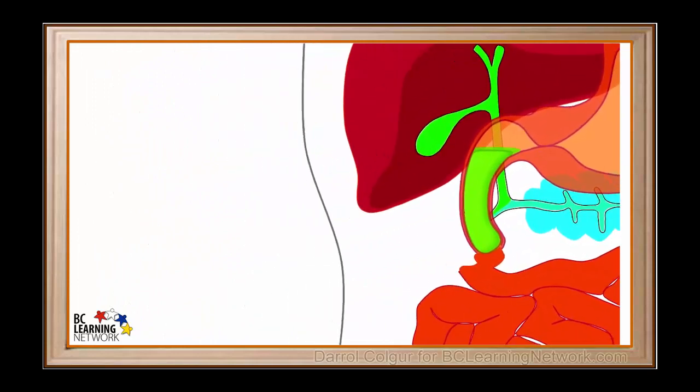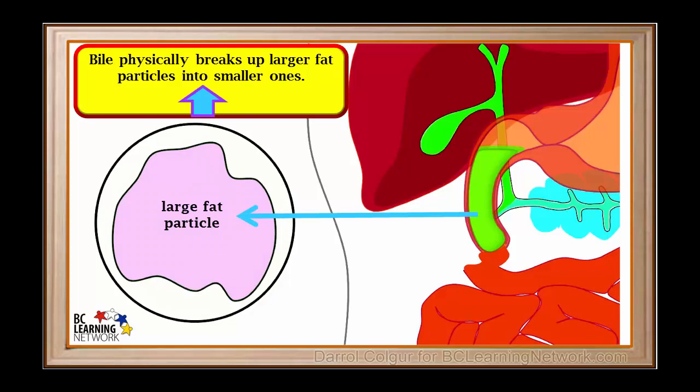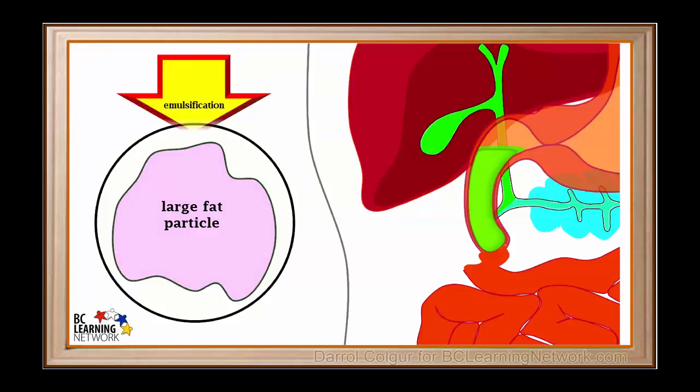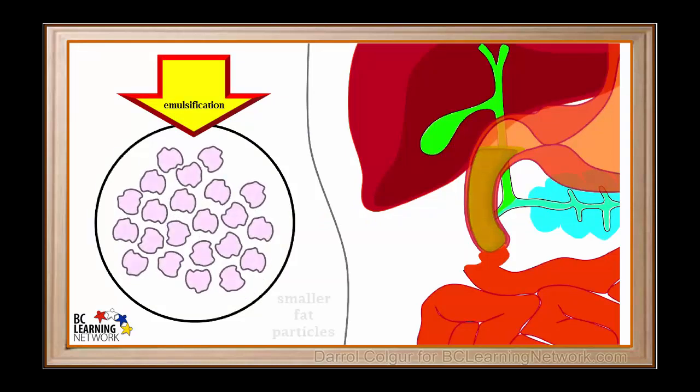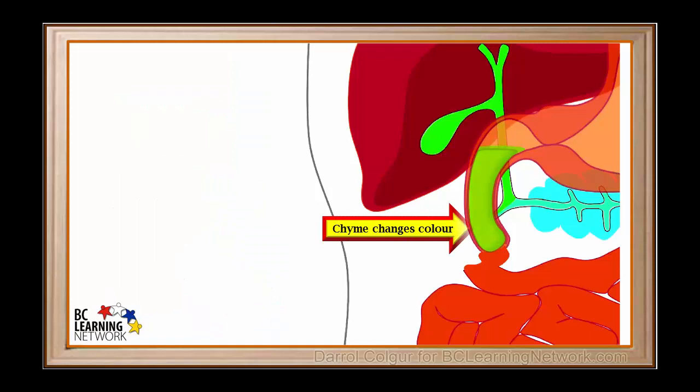Partially digested food at this point contains some large fat particles. Bile physically breaks up large fat particles into smaller ones. This process is called emulsification. We see the large fat particle breaking up into smaller particles. No chemical reactions occur during emulsification. This is a type of physical digestion. The presence of bile also causes chyme to change color during its time in the duodenum.